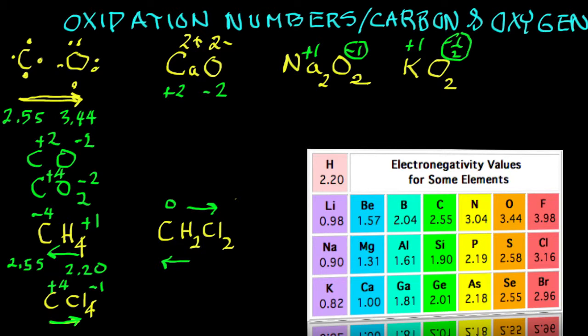So oxidation numbers do not even have to be whole numbers. And finally, the only element that is more electronegative than oxygen is fluorine. Fluorine would be a minus 1. There are two of them, so oxygen would be equal to a 2 plus.